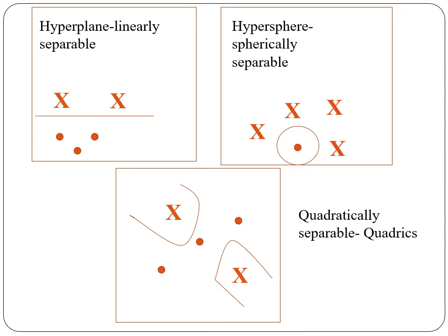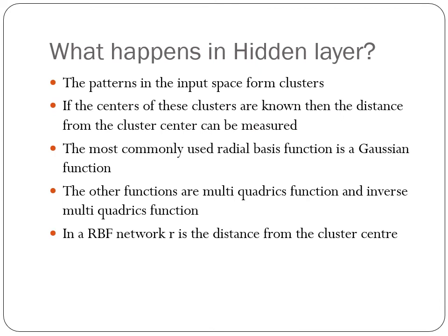This is one example which you have seen in the previous slide about hyperplane which is linearly separable. This is hypersphere spherically separable by means of radius. There is this segregation between belonging to the class and not belonging to the class. This is quadratically separable, quadrics. Now the concept of parabola or quadrics is being used to separate between belonging to the class and not belonging to the class.